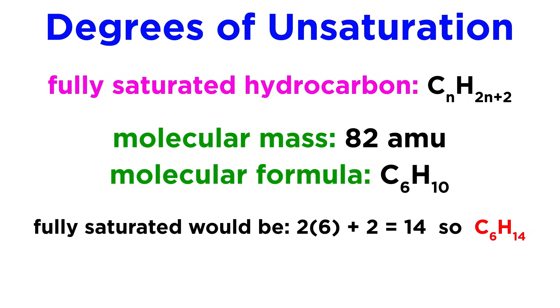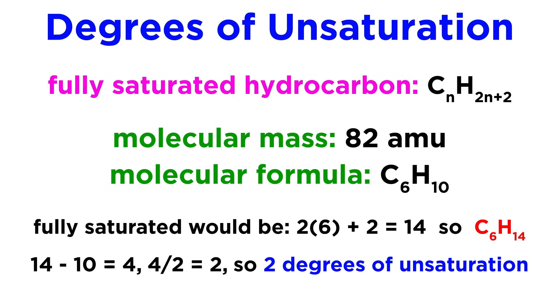If a six-carbon molecule were fully saturated, it would have the formula C6H14. Since there are only ten hydrogens, this molecule must have two degrees of unsaturation.